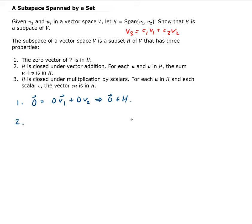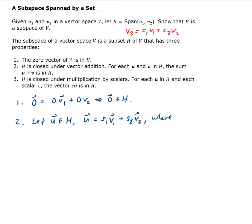For the second property, we need to pick two vectors, add them together, and show that the result is in H. Let U belong to H, which means U can be written as S1 times V1 plus S2 times V2, where S1 and S2 are real values.